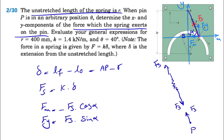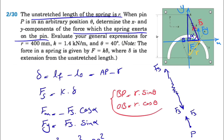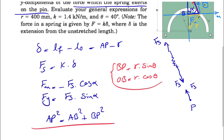Considering the right triangle we have here, by the Pythagorean theorem: AP² = AB² + BP². Looking at the right triangle underneath — highlighted in yellow — we know that OP = r because it's the radius of the half circle. So it's easy enough to find BP. Basically, BP = r·sin(θ), and OB = r·cos(θ). We're going to plug all of these into our Pythagorean theorem.